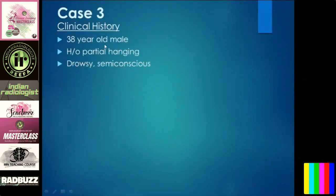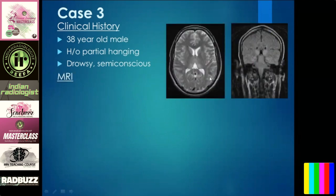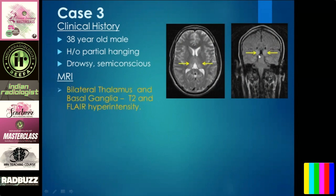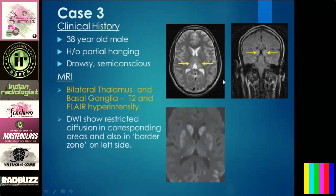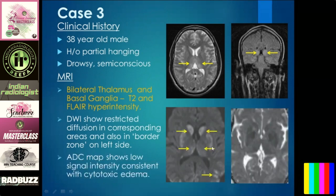Case three: 38-year-old with history of partial hanging, drowsy and semi-conscious. The moment you see this history, think of hypoxia. When thinking of hypoxia, always do a FLAIR coronal image. On MR, you see bilateral thalamic and basal ganglia FLAIR hyperintensities and diffusion-weighted restricted diffusion, also in some areas of the cortex. The ADC map shows low signal consistent with cytotoxic edema.